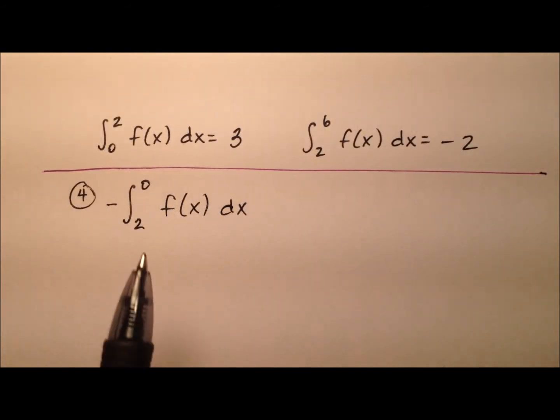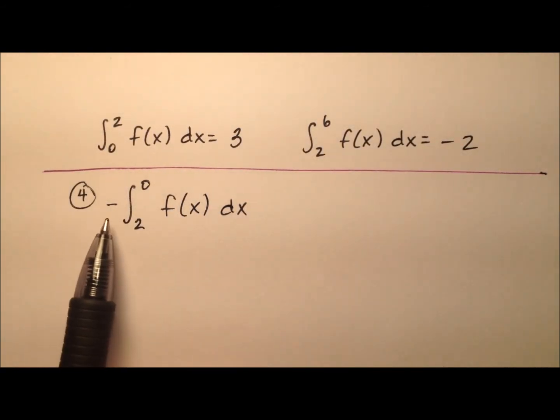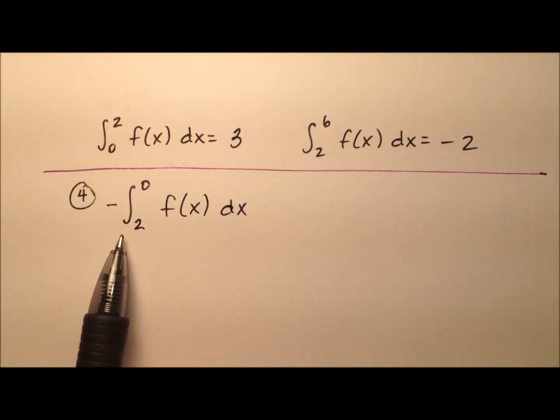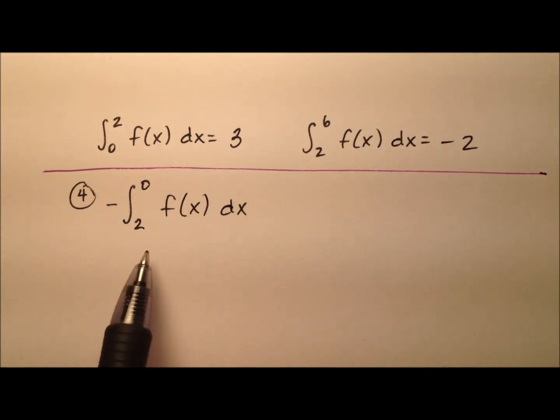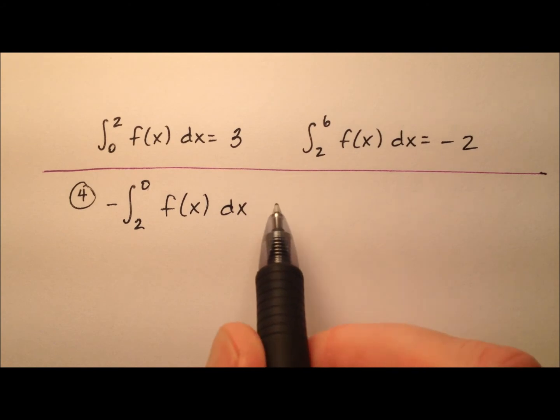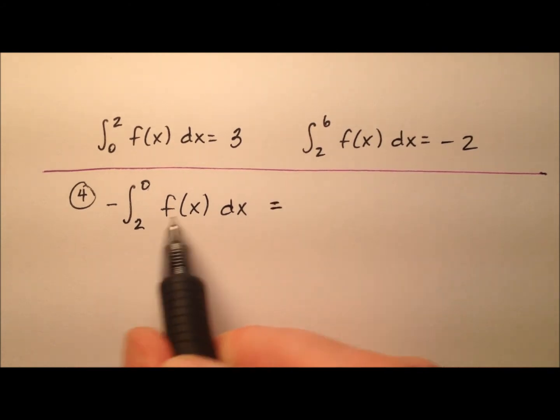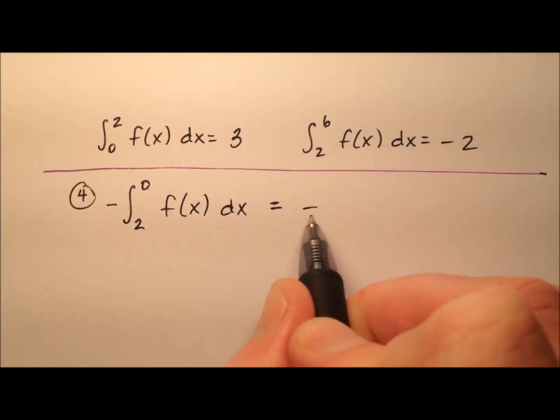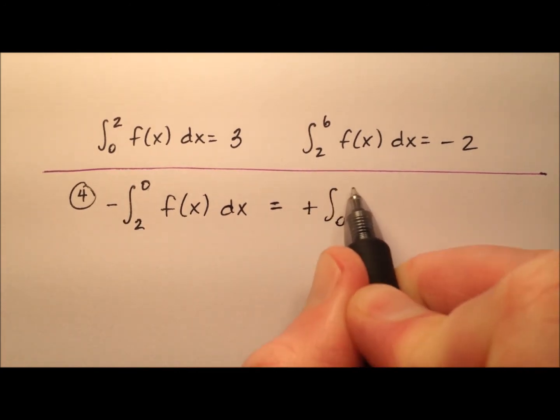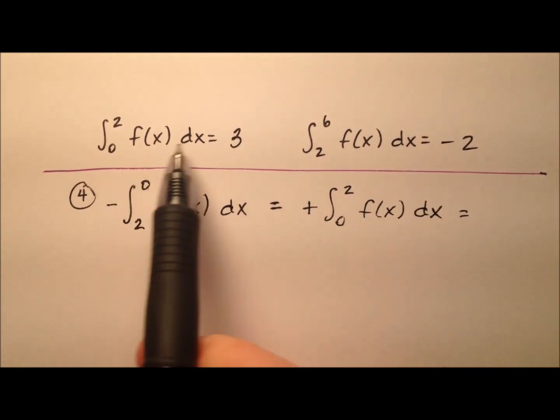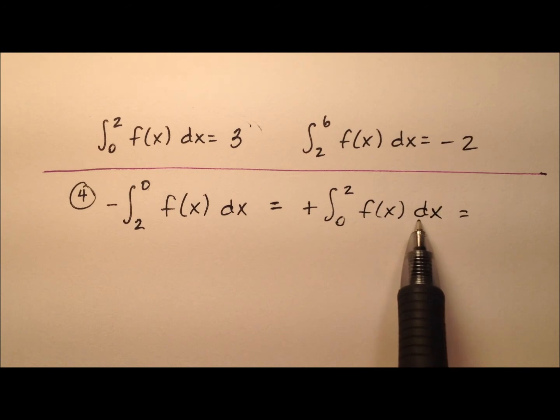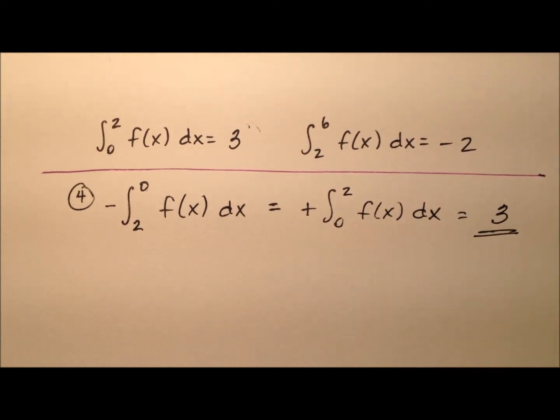In this fourth example, we're looking for the negative of the integral from 2 to 0 of our function f(x). Our limits of integration have been switched. If we switch them back, we're taking the opposite, but it's already a negative, so we make it positive: the integral from 0 to 2 of f(x) dx. That's one of our definitions given up here, so the value is 3.